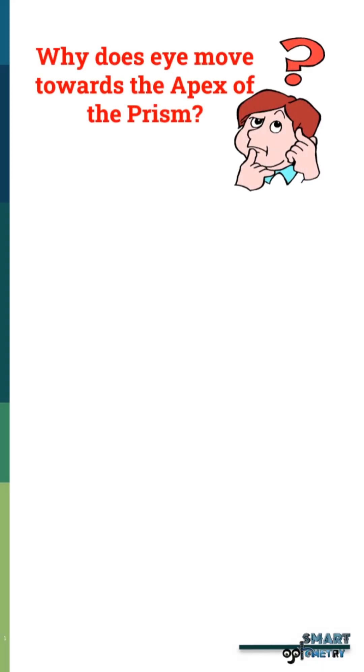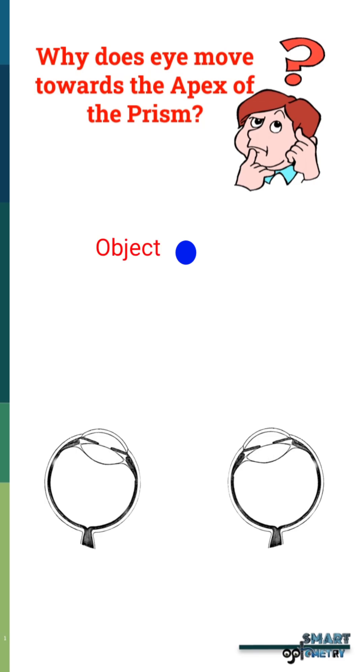Why does eye move towards the apex of the prism? Our eyes are positioned in such a way so that rays from an object can fall in the fovea.